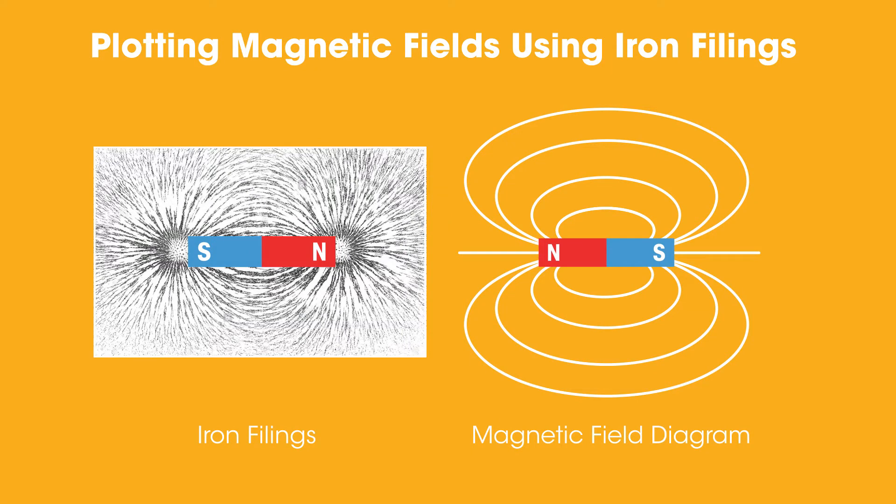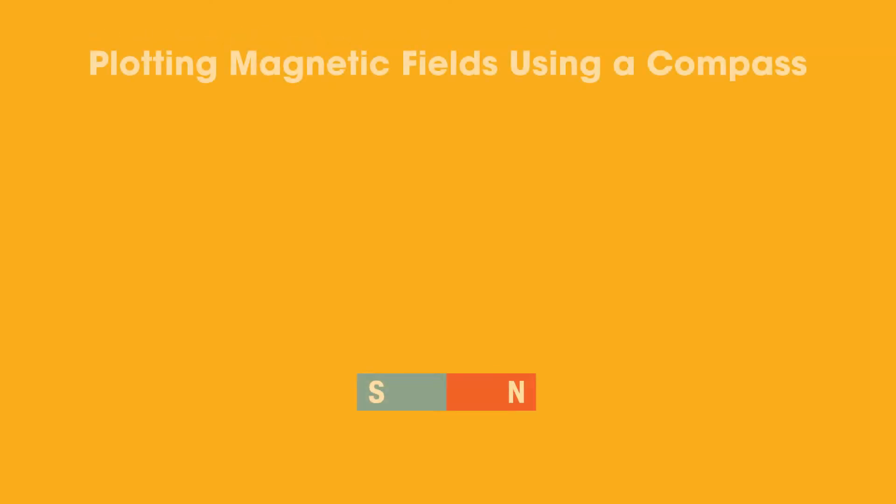So iron filings show us the pattern, but they don't show us the direction, which is where compasses become useful. So how can compasses show us the direction? Place some small compasses around a magnet. The arrows of the compass will move so that they are pointing towards the direction of the magnetic field.